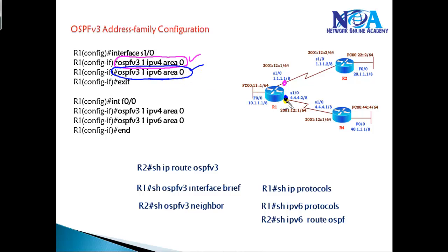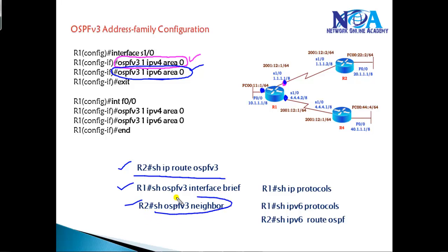In my scenario, I'll enable OSPFv3 on both the LAN and WAN interfaces. Verification commands differ here: for IPv4 routes use 'show ip ospf v3'; for interfaces use 'show ospfv3 interface brief'; and for neighbors use 'show ospfv3 neighbor' — the old 'show ip ospf neighbor' command will not show anything under the new configuration.